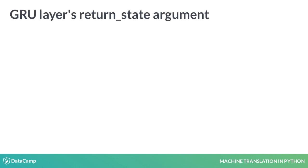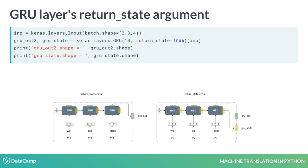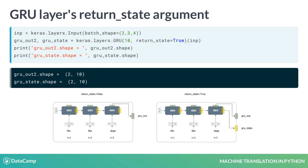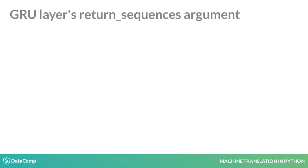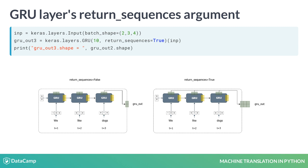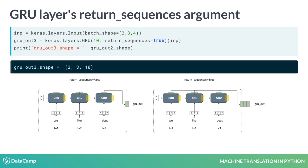The input layer has two more important arguments: return_state and return_sequences. If you set the return_state argument to true, the model will return two outputs instead of one. One is the last hidden state, and the other is the last output. For a GRU layer, these are identical. Next, if you set return_sequences to true, the model will output all the outputs in the sequence instead of the last output. This will be a batch size by sequence length by hidden size shaped output.